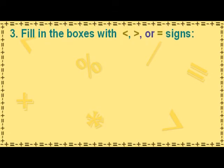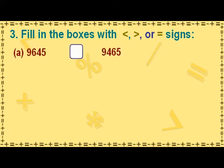Fill in the boxes with less than, greater than, or equal to signs. To find whether a number is less than or greater than the other, we compare the place value of the digits in the two numbers beginning from the left side.